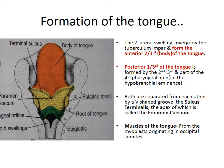With development, the two lateral lingual swellings overgrow and fuse in the midline along with the tuberculum impar to form the anterior two-thirds of the tongue — also called the body of the tongue — represented by the orange color in the picture.